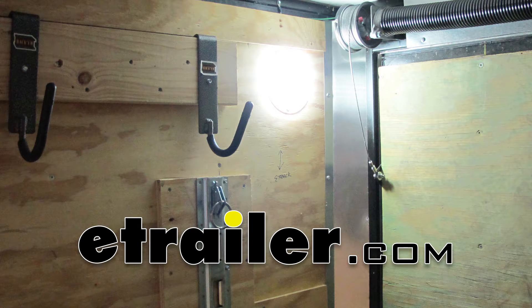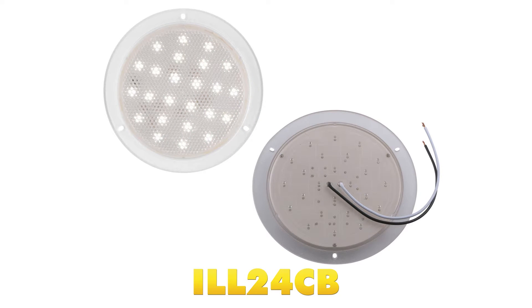Today on our enclosed trailer, we're going to be installing the Optronics LED domed utility light in a 6 inch round design with white LEDs and a clear lens, part number ILL24CB.